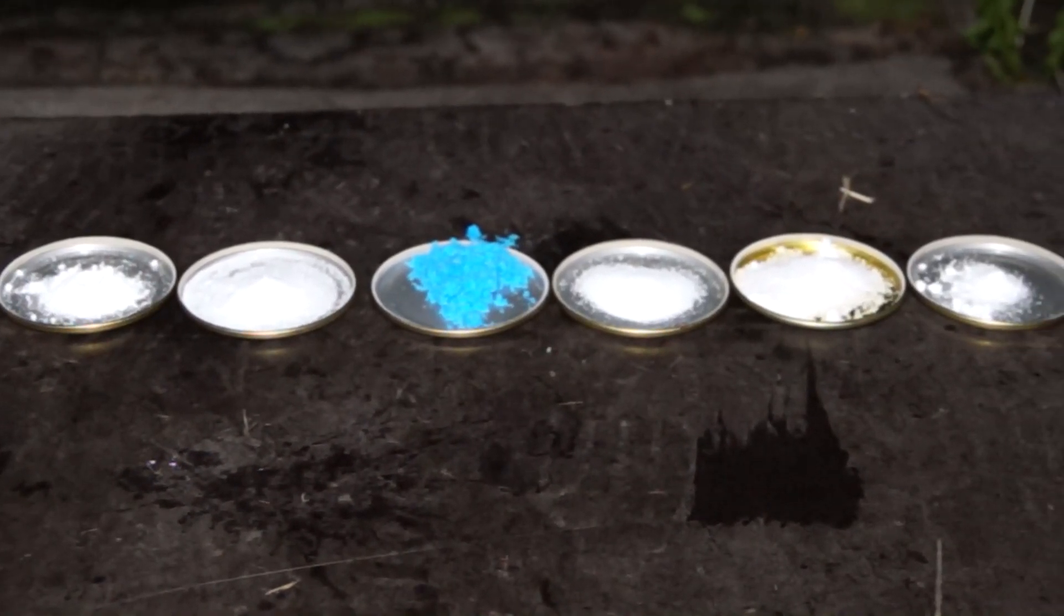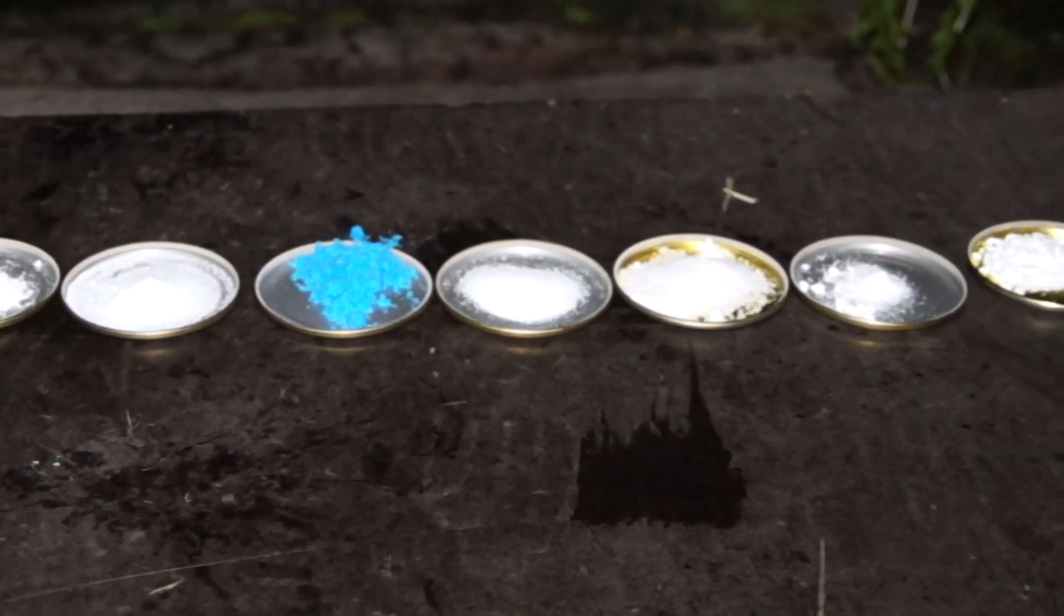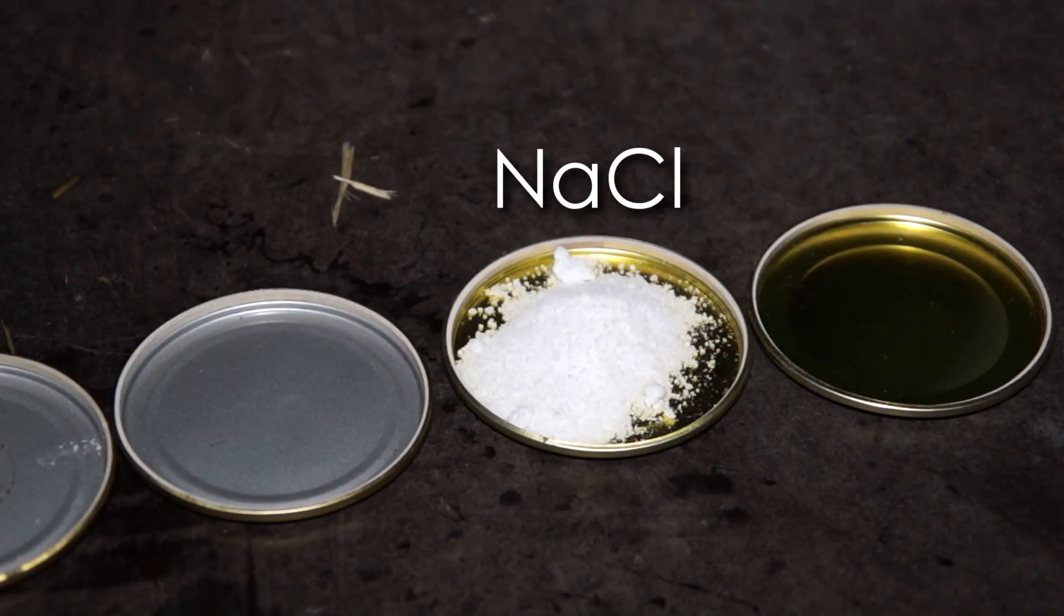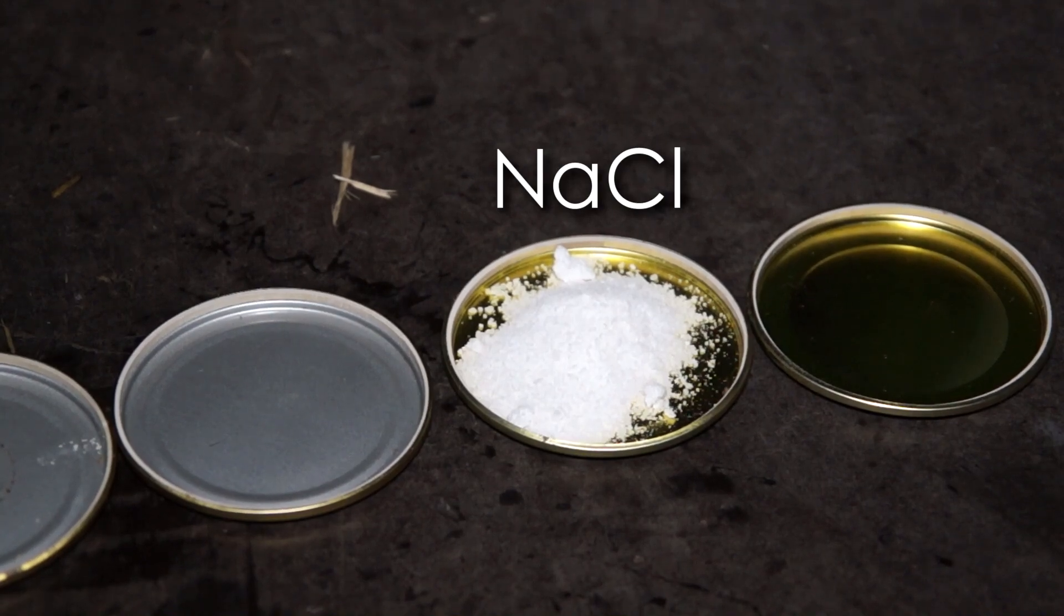For this experiment we will need different metal salts that will paint flames in different colors. The first ingredient, one that you can find in our kitchen, is cooking salt. It will paint the flame in yellow color.